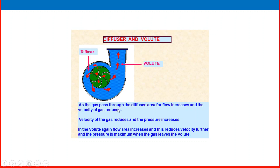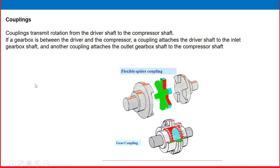Diffuser and volute: as the gas passes through the diffuser, the flow area increases, the gas velocity reduces, and the pressure increases. In the volute, the flow area increases further, reducing velocity even more, and the pressure is at its maximum when the gas leaves the volute.